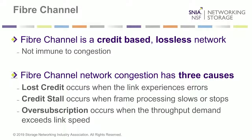Fiber Channel is a credit-based lossless network. While it deals with congestion nicely by not dropping packets and pacing the transmitter, it is not immune to congestion. When congestion is sustained, because of the lossless nature, a congested port applies back pressure by not releasing credits to the transmitter. That port now becomes a congestion point and can affect downstream ports by pausing them or not releasing credits back to them. As a result, one congestion point can actually spread through the network and affect multiple ports within the fabric — and indeed can affect completely unrelated flows.